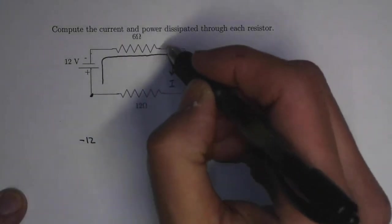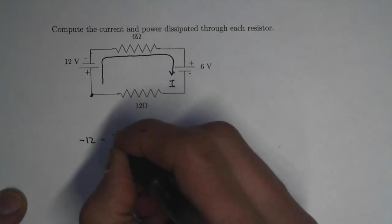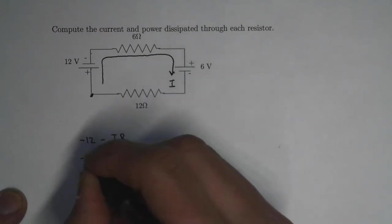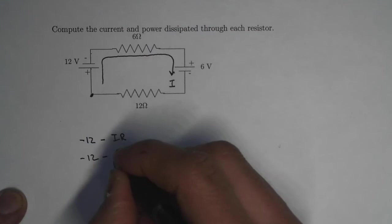Now every time you cross a resistor, it's again minus IR, where in this case it's minus 12 minus 6I.